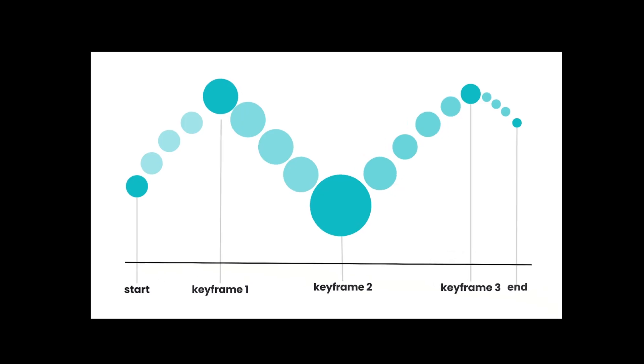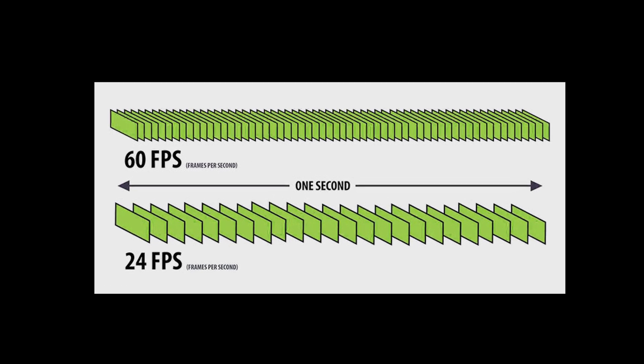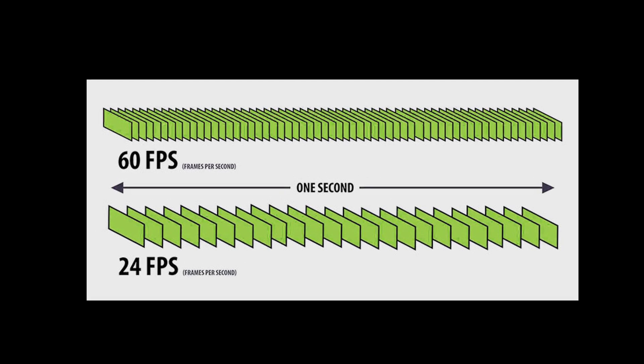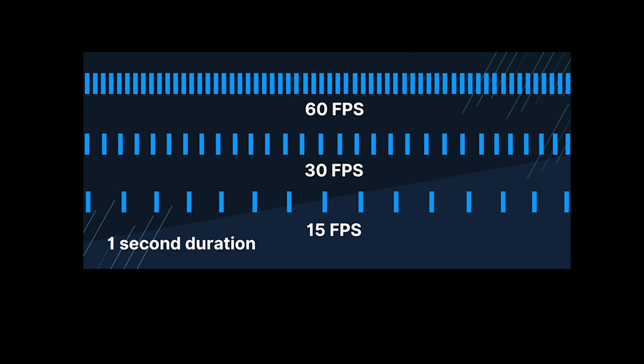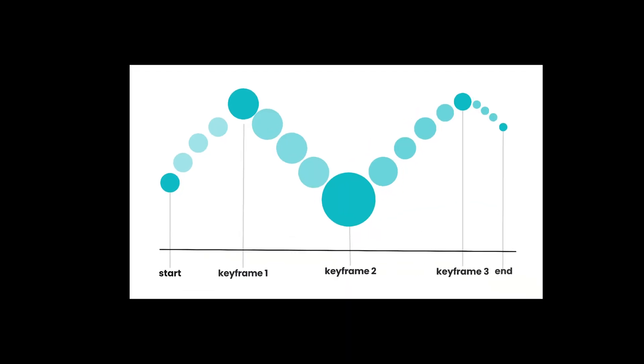What are keyframes actually? Keys are locations or spots on your timeline, and frames are basically the frames. Every timeline will have either 23.9 frames per second, 30 frames per second, or 50 frames per second, depending on what you're watching. Like if you're watching Formula One highlights on YouTube, you'll probably watch that at 50 frames per second because of all the action — the cars are going super fast. So you have 30 frames in one second, and the keys are those locations on the timeline.